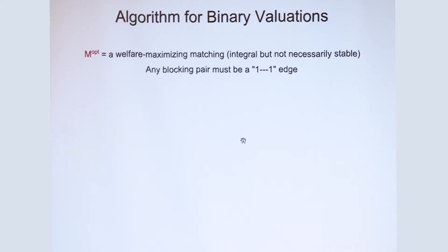Because the valuations are binary, any blocking pair must be along a one-one edge. So in terms of picture, say M1, W1 are a blocking pair. They both should value each at the red one, but they're not matched to each other. And because the matching is integral, their utilities must be zero, because it has to be strictly below one. And in fact, the picture looks like this. So M1 should be matched to some woman he values at zero, and W2 should be matched to some man she values at zero.